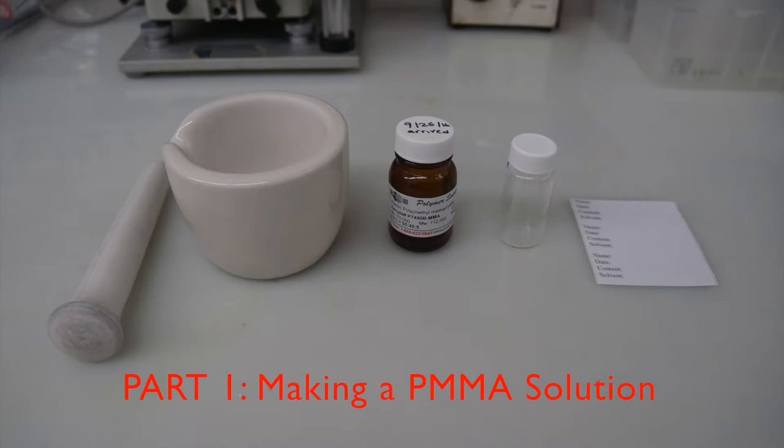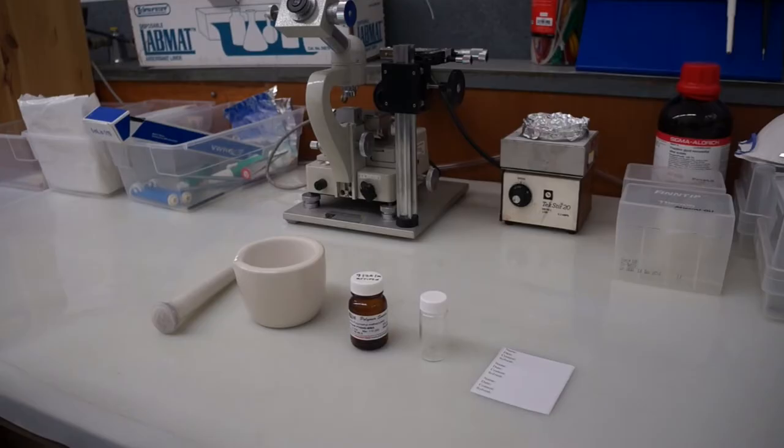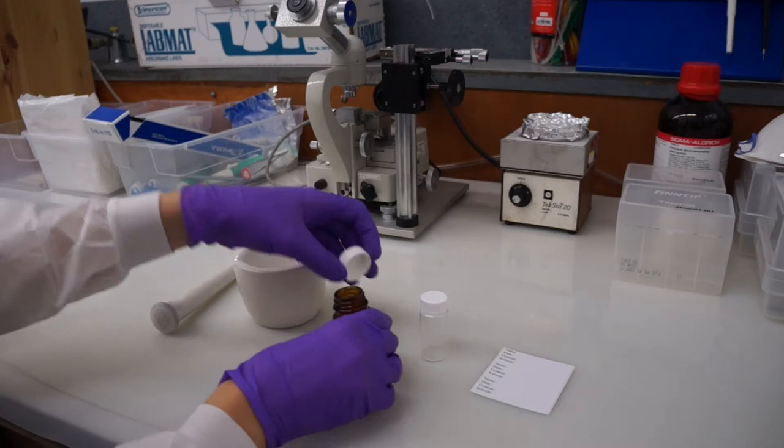Let's get started with the first part, making a PMMA solution. We're going to need to weigh out small amounts of PMMA and dissolve it. But since our stock often becomes one large piece, we'll need to break it up somehow. Here I use a mortar and pestle.